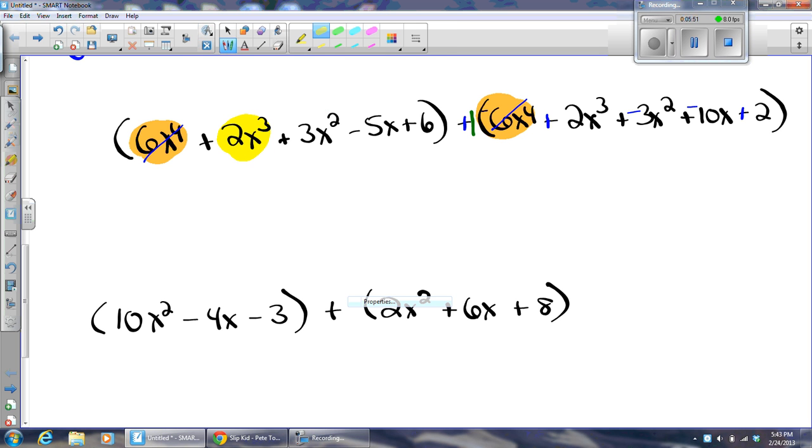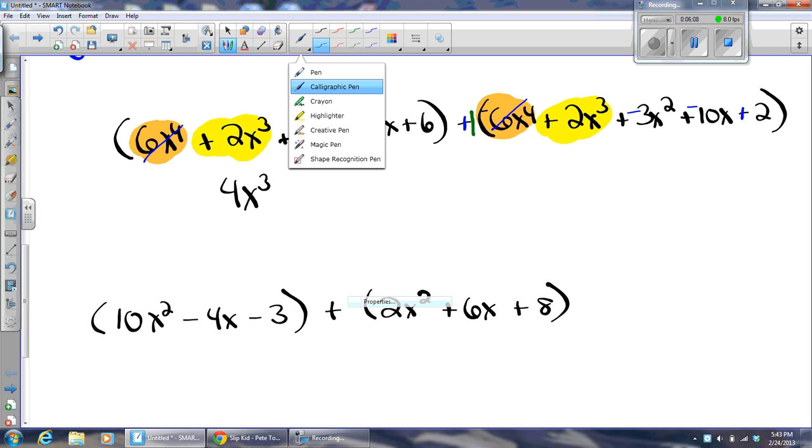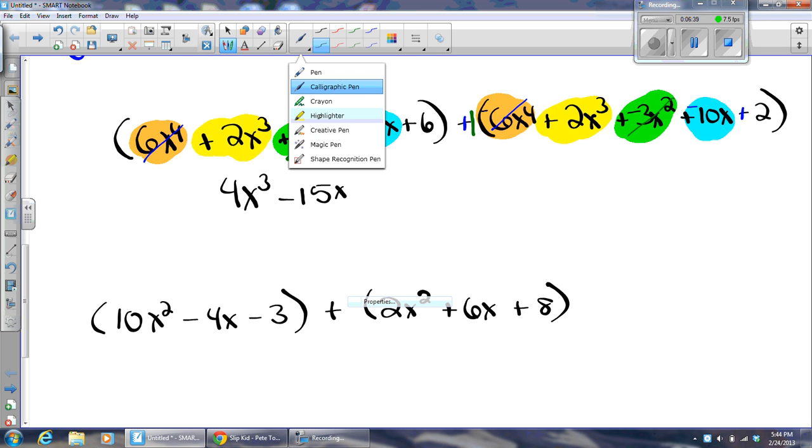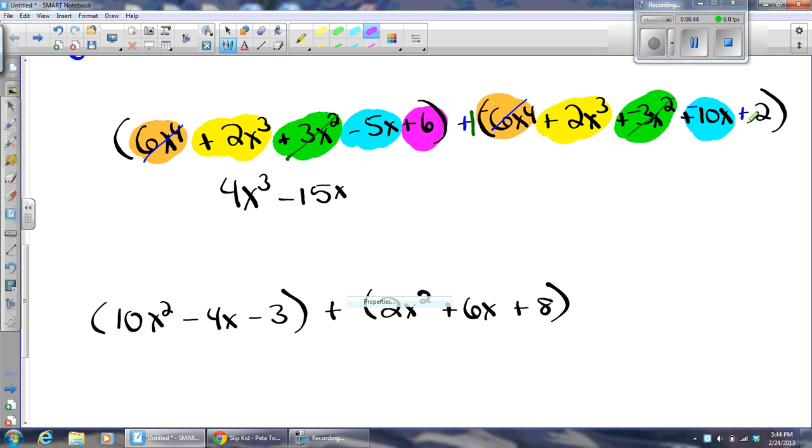Go back to my highlighter. And I got x cubes here, two x cubes. I should grab the sign when I do that. And I've got two more x cubes here. Well, that's going to give me four x cubes. And here I have 3x squareds and negative 3x squareds. Those are going to cancel. The positives and negatives cancel out. So they are gone. Minus 5x and a minus 10x. It's going to give me a negative 15x. And then, finally, a plus 6 and a plus 2 is going to get me a plus 8.